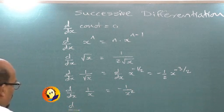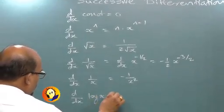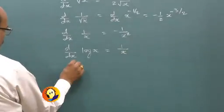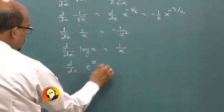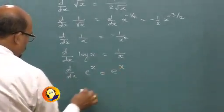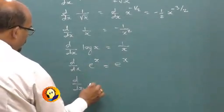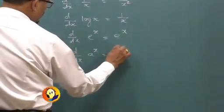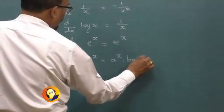d by dx of log x is 1 upon x. d by dx of e raised to x is e raised to x. d by dx of a raised to x is a raised to x into log a.